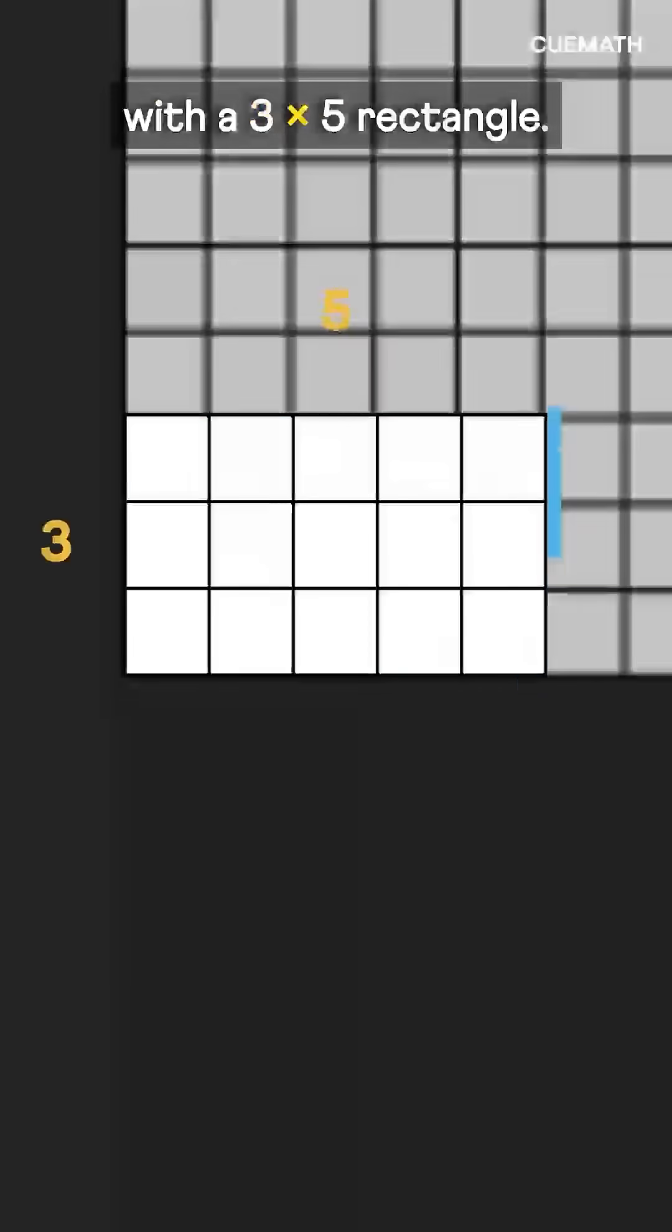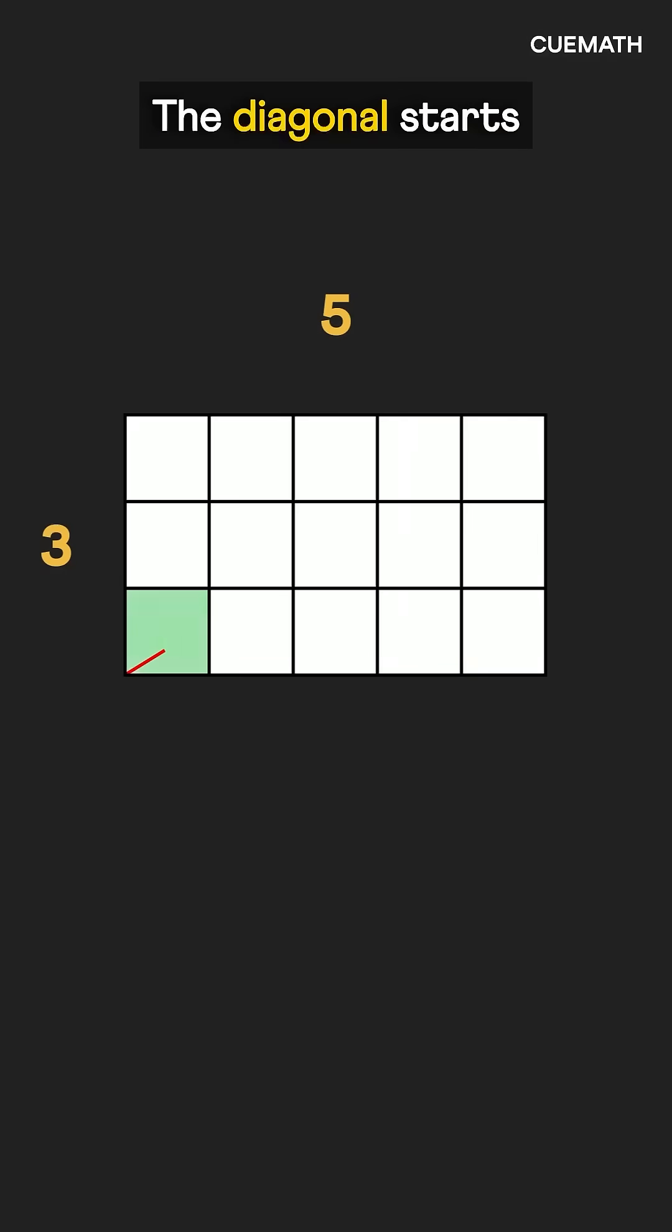Let's explore with a 3 by 5 rectangle. The diagonal starts in the first square, crosses a vertical line, and enters the second. It then crosses a horizontal line into the third square, another vertical line into the fourth, and so on.